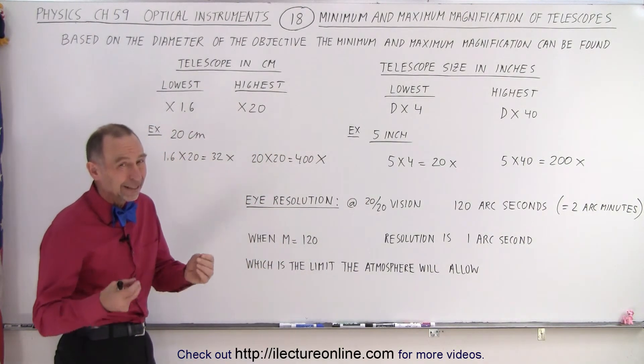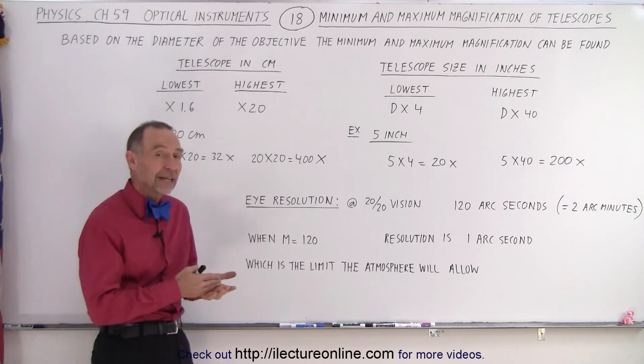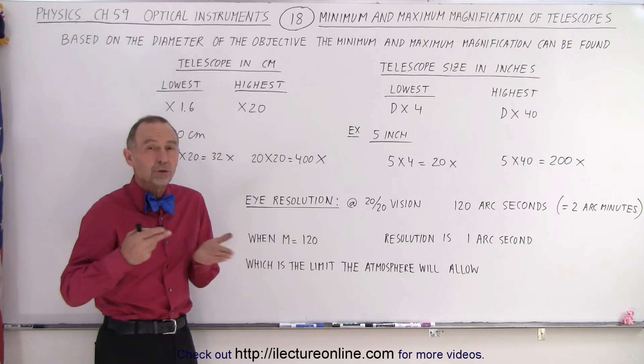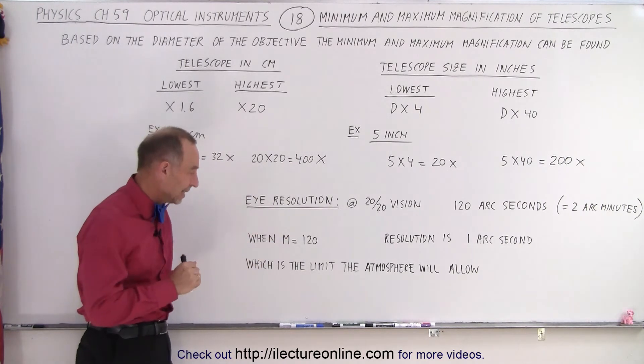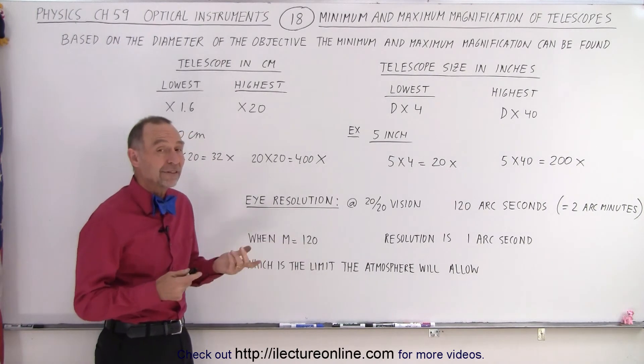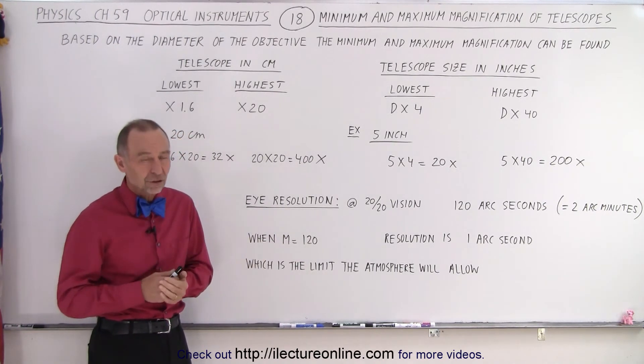Well, 1 arc second, that's about the limit that the atmosphere will allow. At higher magnifications, the atmosphere will limit the ability for the telescope to do better because of the turbulence in the atmosphere, and so you can see that anything beyond 120 magnification doesn't do you a lot of good because of the atmospheric conditions.